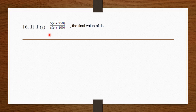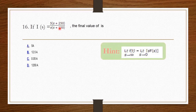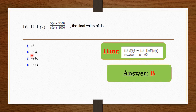If I(s) = 5(s + 250) / [s(s + 100)], find the final value. Using the final value theorem: limit as t → ∞ of f(t) = limit as s → 0 of s · F(s). Multiplying by s and applying the limit s → 0, the answer is 12.5 amperes. Option B is the right answer.